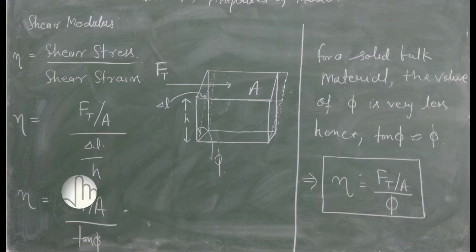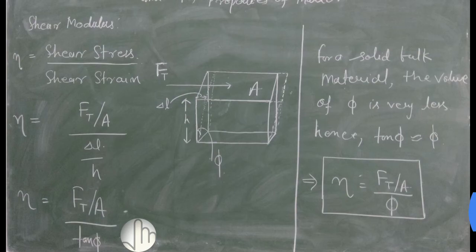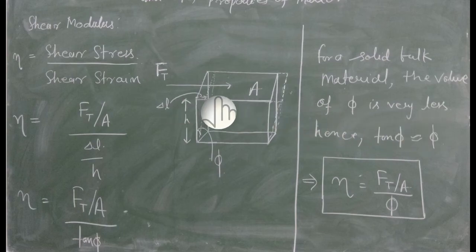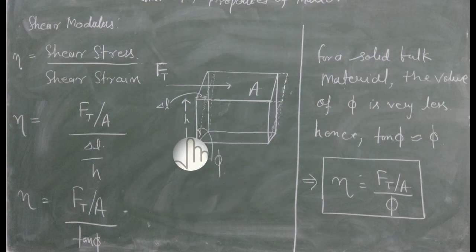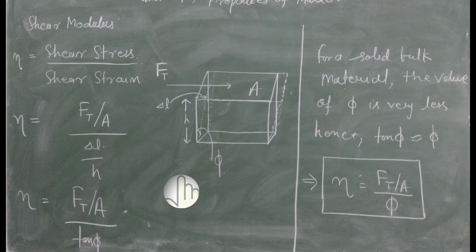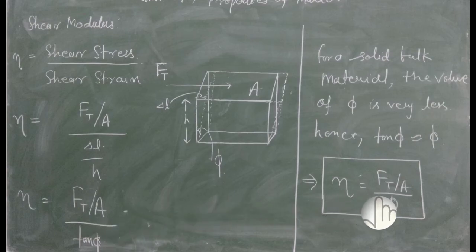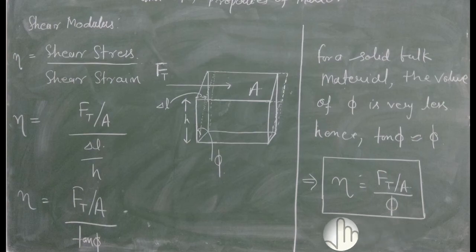تو یہ formula ہو گیا: eta is equal to Ft upon A divided by tan φ۔ اب اگر کسی solid bulk material کی بات کریں تو for a solid bulk material the value of φ is very less۔ جب tangential force لگے گا تو displacement اوپر والی فلق میں کافی کم ہوتا ہے اور angle کا مان کافی کم ہوتا ہے۔ Mathematics میں جب φ کافی کم ہو تو tan φ is approximately equal to φ۔ یہ approximation formula میں لگاتے ہیں تو eta is equal to Ft upon A divided by φ — یعنی shear stress upon shear strain — یہ shear modulus کے لئے expression ہے۔